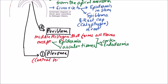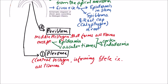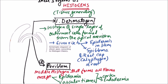Then the third histogen is plerome. The plerome is the central histogen and is forming the stele. Stele means all tissues inner to the endodermis. So this is all about the three types of histogen.